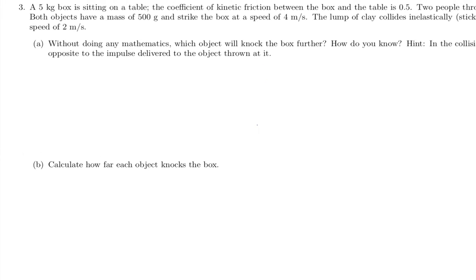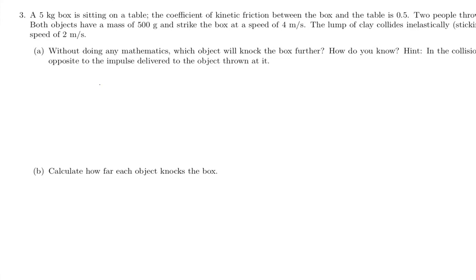So let's draw some little cartoons of what's going on. In both cases, we have a table that has some friction, and we have a box sitting on that table. We've got some little object that we throw at it. That object is flying in at some speed v-naught, which is 4 meters per second in both cases.